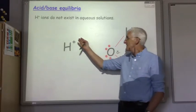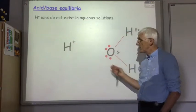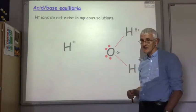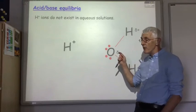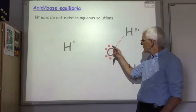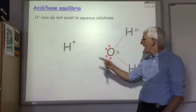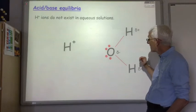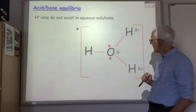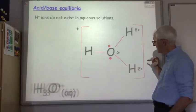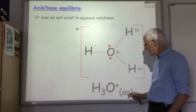Now the attraction between this small positively charged ion and the negative part of the water molecule is too much for the hydrogen ion to resist. So you actually get a dative bond formed using two of the oxygen's non-bonding electrons with the H+ ion, forming this species which is the hydronium ion H3O+ aqueous.